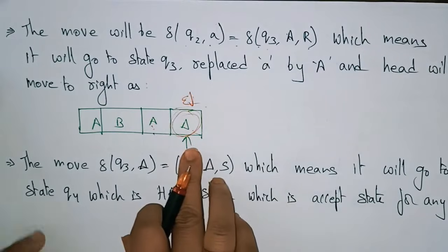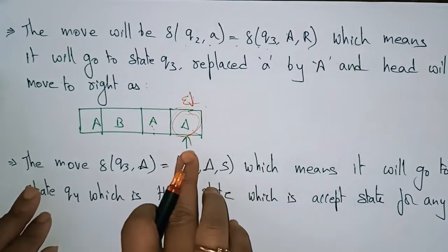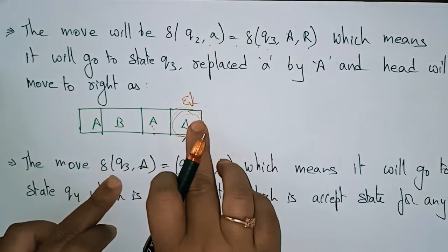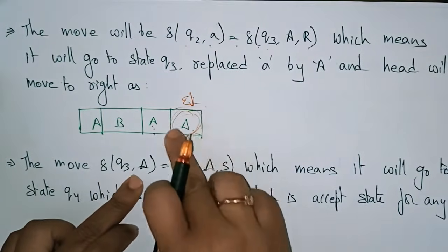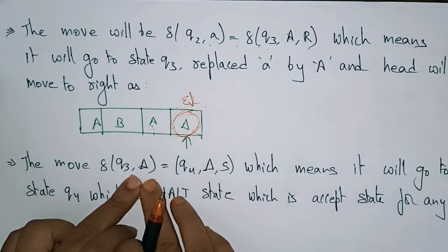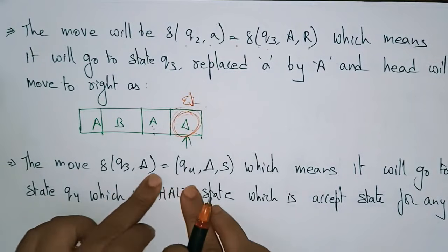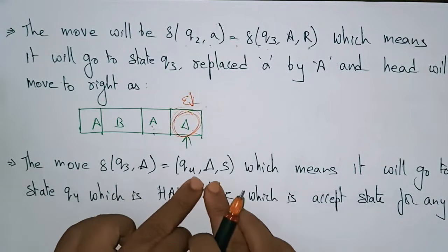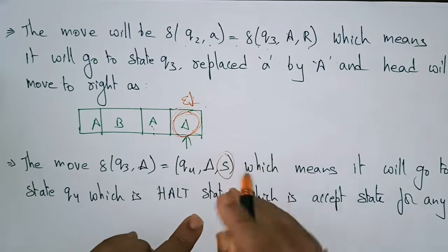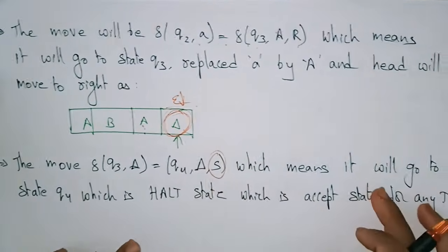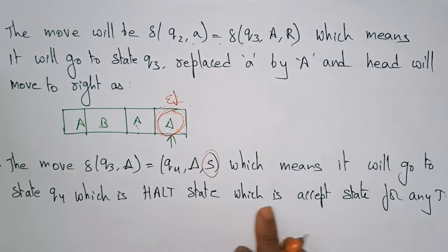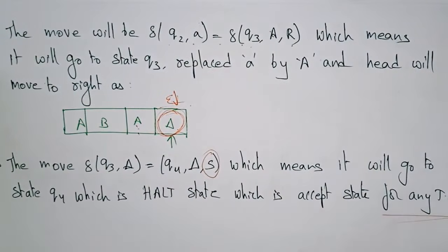Now the head points to the blank symbol position. I write the transition function: delta(Q3, blank) — the state changes to Q4, and the blank symbol remains. Q4 is the halt state, which means the string ABA is accepted by the Turing machine.